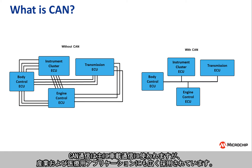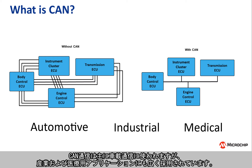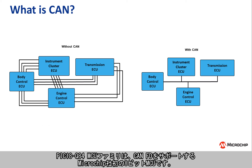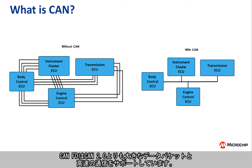CAN communication is primarily used for automotive in-vehicle communication but is also widely used in industrial and medical applications. The PIC18 Q84 microcontroller family is the first Microchip 8-bit device where the CAN peripheral supports CAN FD, which allows for larger data packets and faster data transmissions than CAN 2.0.